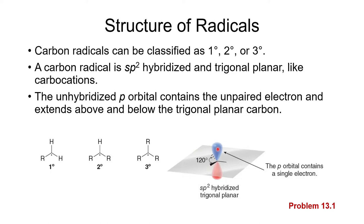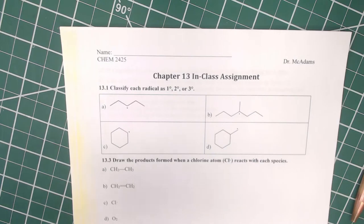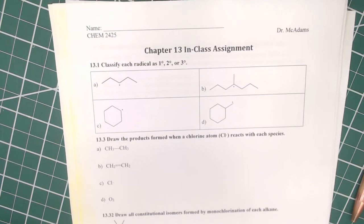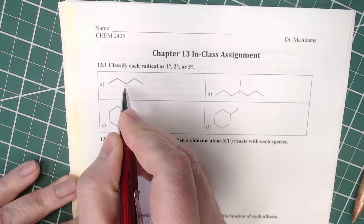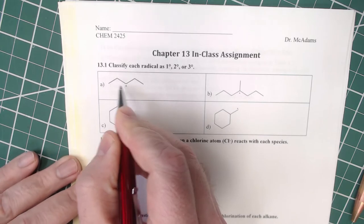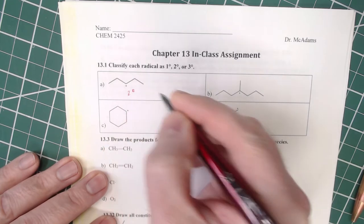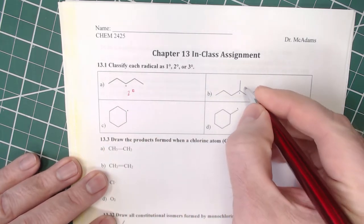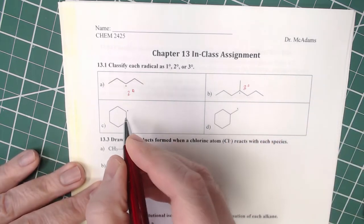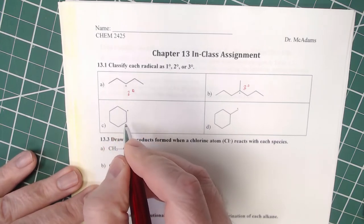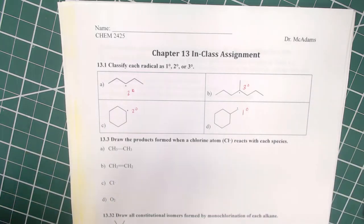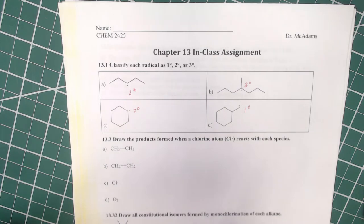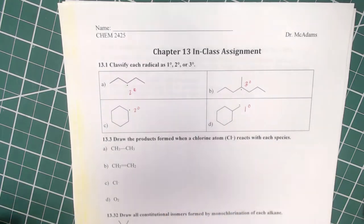Our first in-class assignment is to classify each radical as primary, secondary, or tertiary. We look at the carbon bearing the radical: if two carbons are attached, it's secondary; three carbons attached makes it tertiary; one carbon attached is primary. This should be easy practice, and we want to be able to identify these classifications quickly.